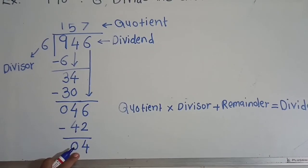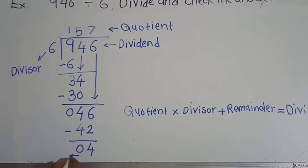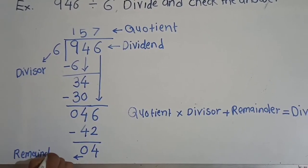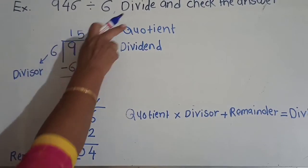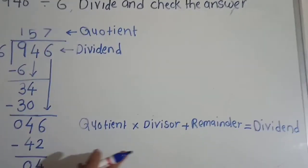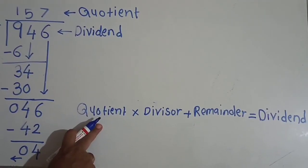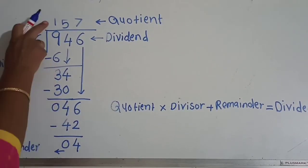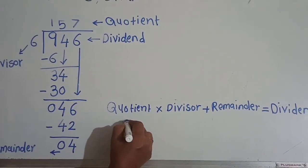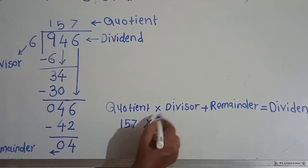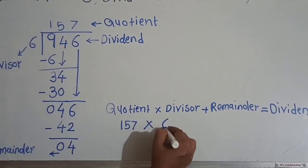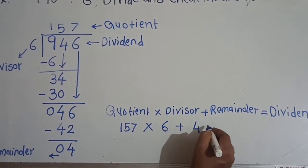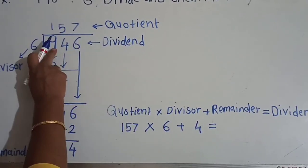Now here in this example, this 946 is called dividend, and this number 6 is called divisor, and this 157 is called quotient, and here 04 means remainder.